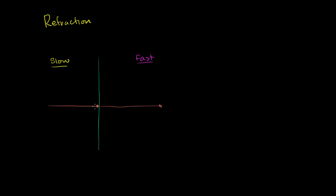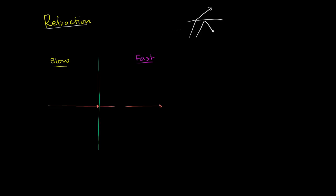So obviously no refraction is going on — the wave has not been deflected. Just as a reminder: refraction is when a wave gets deflected, and reflection is when it bounces back. If a wave bounces off a boundary, that's reflection. But if the wave goes through the boundary and gets bent a little bit — its direction changes — that is refraction, and that's what we're talking about.